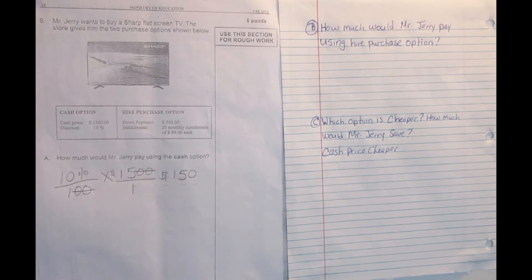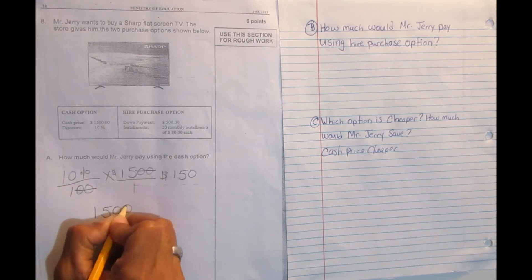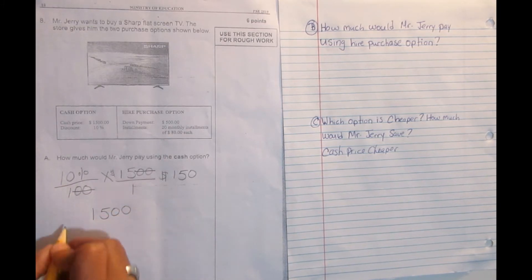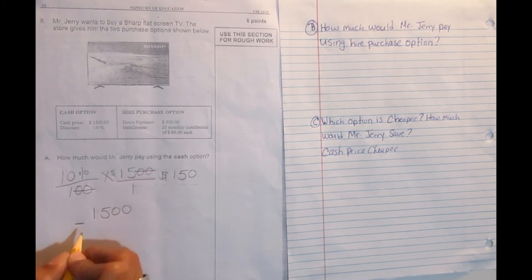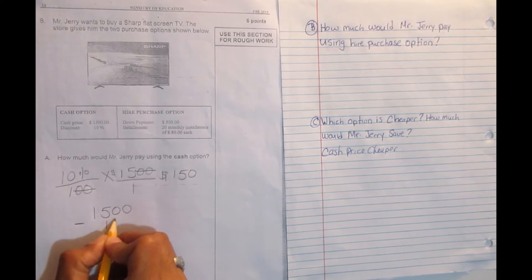But we're not done as yet. That's just the discount that the person get. But remember the TV costs $1,500. And with a 10% discount, so we're going to minus it because it's discount. So you're going to pay $150 less. So let's minus it. Minus $150.